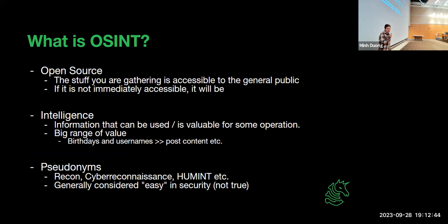A little etymology: OSINT is open source intelligence. 'Open source' means the stuff you're looking at is sort of analogous to open source code — it's accessible to the normal public, or it soon will be if you're requesting it through legal channels. Your job is to piece together information that is already available. 'Intelligence' means the information is valuable. Most of the information on someone's social media won't really be particularly valuable towards accomplishing a given goal, but you might find some diamonds in the rough, like location, date of birth, products and services that somebody uses regularly. OSINT is also called recon, cyber reconnaissance, or human intelligence. It's generally considered easy in security because it doesn't require domain-specific knowledge in a certain technical field.